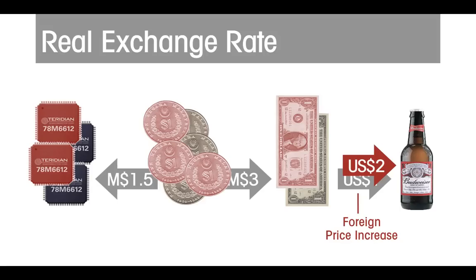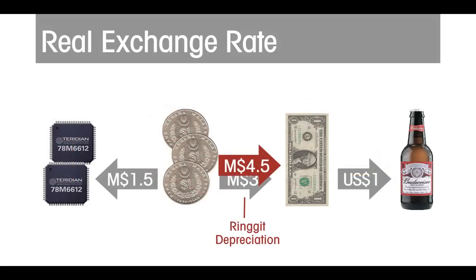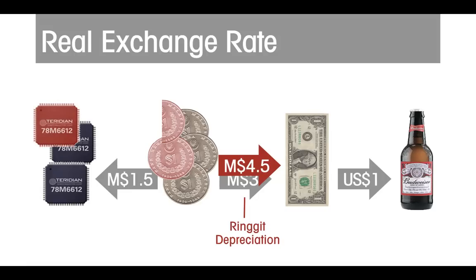Suppose instead there is a nominal depreciation of the ringgit. It weakens from 3 ringgits to 4.5 per dollar. The US $1 needed to buy the beer will now cost 4.5 ringgits. At the prevailing price of chips, this necessitates selling 3 chips. At 3 chips for a beer instead of the previous 2, this too represents a real depreciation of Malaysian products.